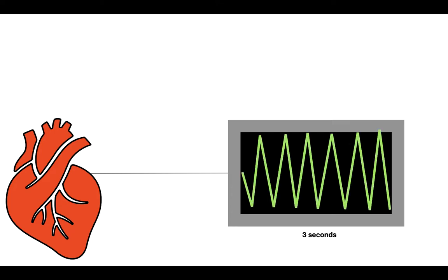In this case, the experiment shows that the heart beats six times in three seconds. Now in order to find the heart rate, you divide six by three, which gives you two, and then multiply that by 60, which gives you 120 beats per minute.